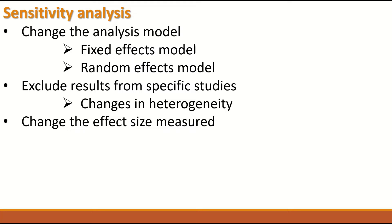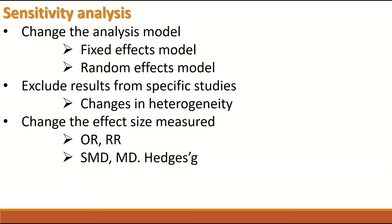Another sensitivity analysis can be performed by changing the effect size measure. If the odds ratio is used as a measure of effect size, then a risk ratio can be used instead. Similarly, for continuous outcomes, standardized mean difference can be replaced by mean difference, Hedges' g, or Cohen's d. These are the changes that can be adopted when repeating meta-analysis, observing the effect on the overall estimate of the effect size and changes in heterogeneity.